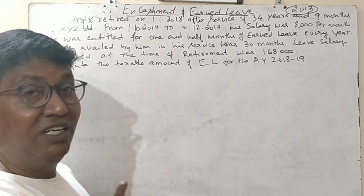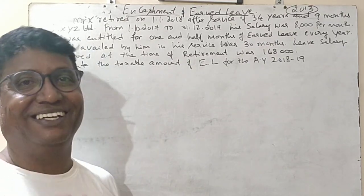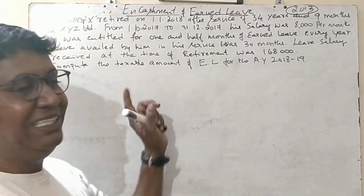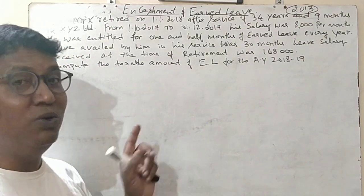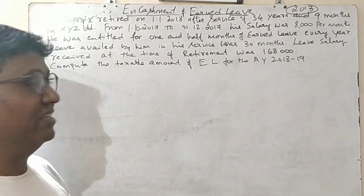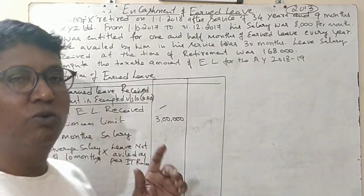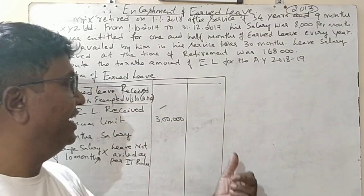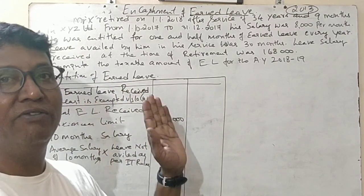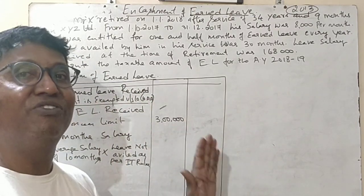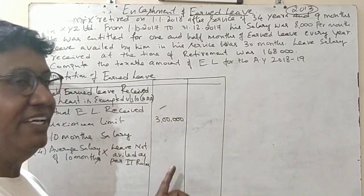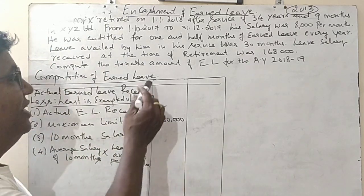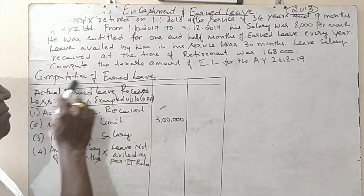In the case of a non-government employee, it is not completely exempted — it is partly taxable and partly exempted. We need to know how much is exempted and how much is taxable. So employees are classified into two categories: government employee, where any amount of encashment of leave salary at retirement is completely exempted, and non-government employee, where it is partly taxable and partly exempted.